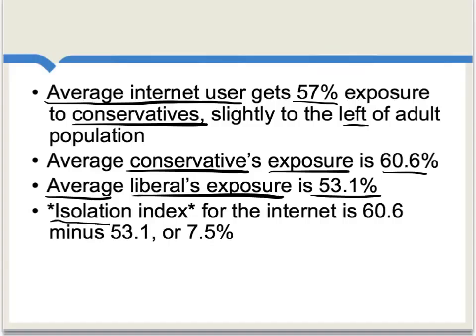From this, we can define what is called an isolation index for the Internet. The isolation index is calculated by taking the typical conservative's exposure, which is 60.6%, and the typical liberal's exposure, which is 53.1%, and subtracting one from the other. We get 7.5%, and that is what we are calling the isolation index. That's picking up how ideologically different the Internet consumption of a typical conservative is from a typical liberal.